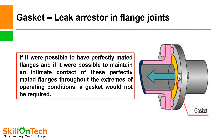Gaskets are leak arrestors in flange joints. Can we think that a flange joint can be leak proof without a gasket? Yes, if it were possible to have perfectly mated flanges and if it were possible to maintain an intimate contact of these perfectly mated flanges throughout the extremes of operating conditions, a gasket would not be required. If the flange faces are lapped and they don't have any imperfections, then certainly the flange joint will be leak proof without a gasket.